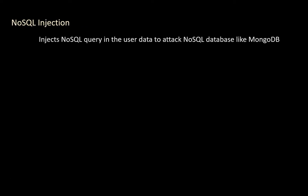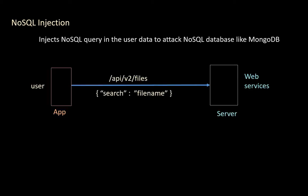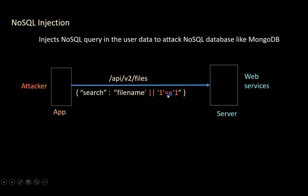NoSQL Injection: in this attack, the attacker injects a NoSQL query in the user data to attack a NoSQL database like MongoDB. When a user searches for a file, the following data is sent — a search file name. This query is used as a NoSQL query for the target database. If the attacker injects a logical condition into this query and sends it to the server, the result will return a list of all files.